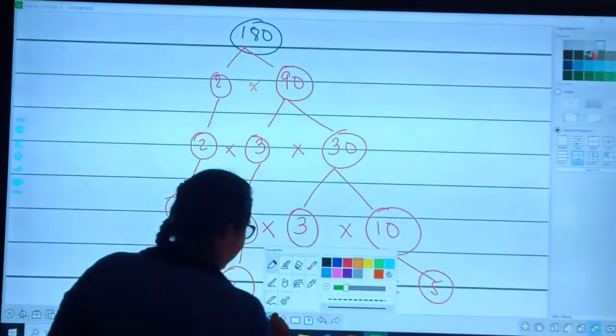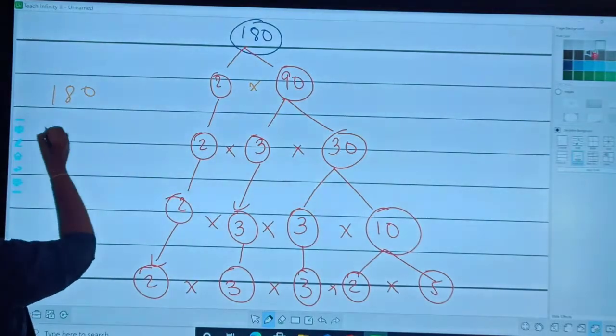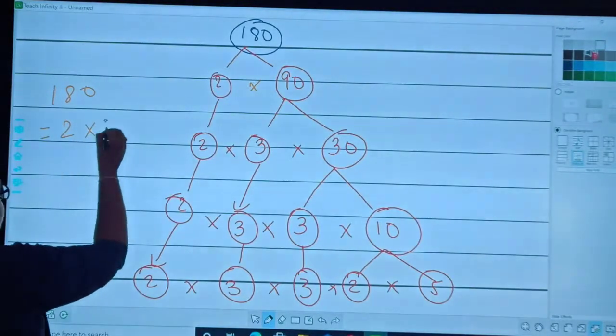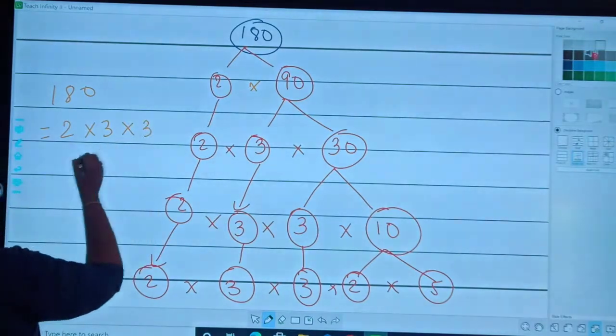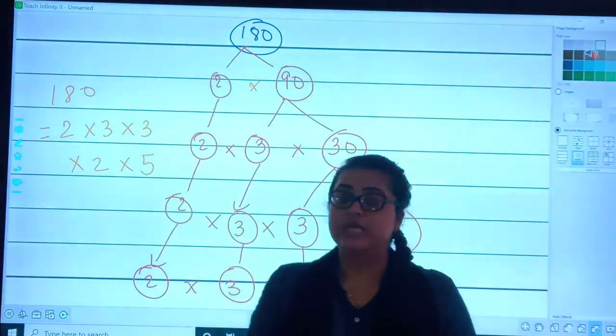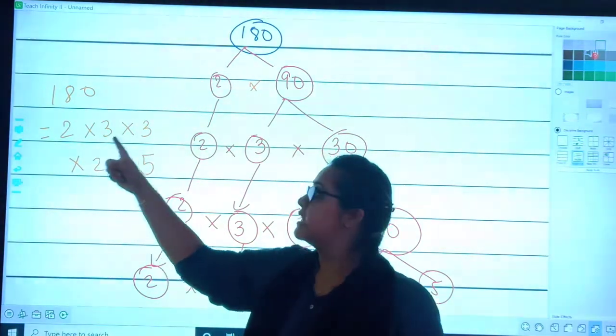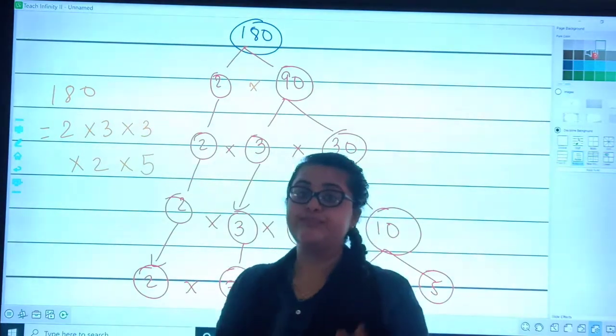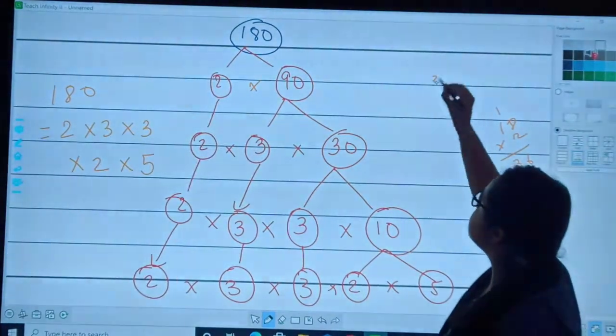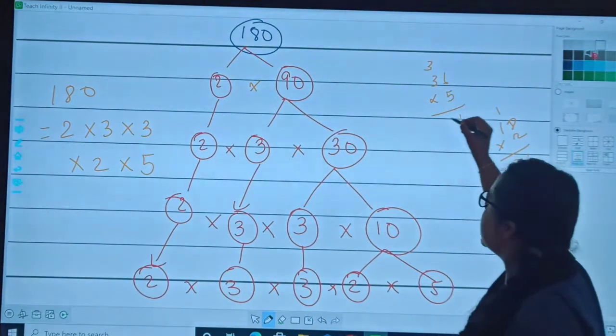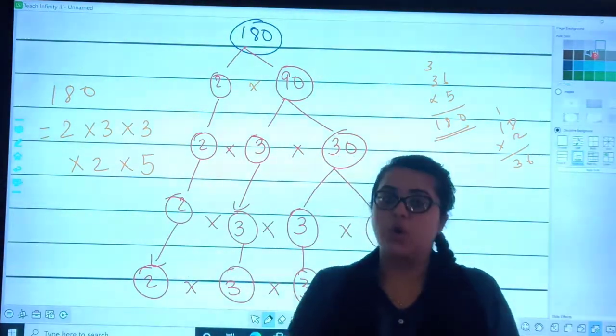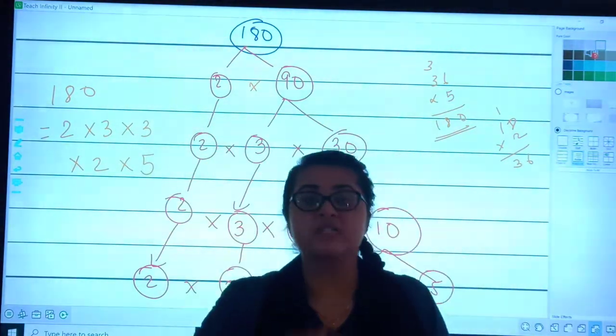Now I have to be writing my final answer: 180 equals to 2 into 3 into 3 into 2 into 5. Now, if you want to check that your answer is correct or not, then you can multiply it. 2 times 3 is 6, 6 times 3 is 18, 18 times 2 is 36, 36 times 5 is 180. I can say that my answer is correct.